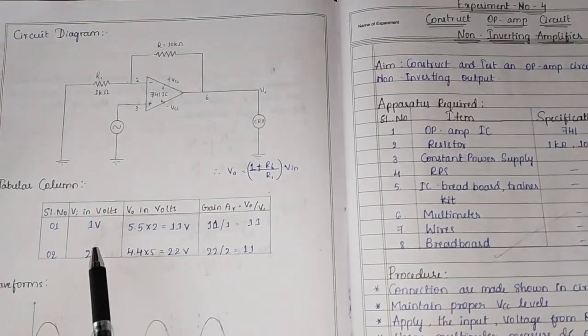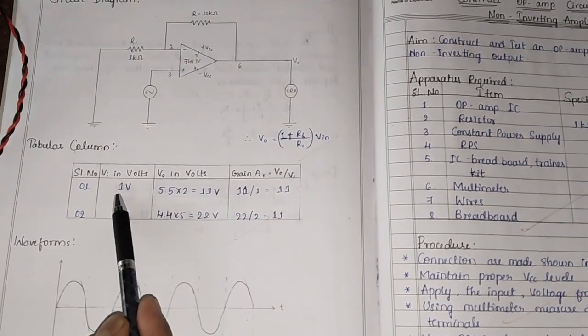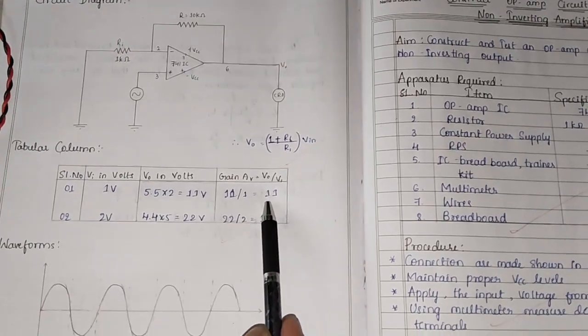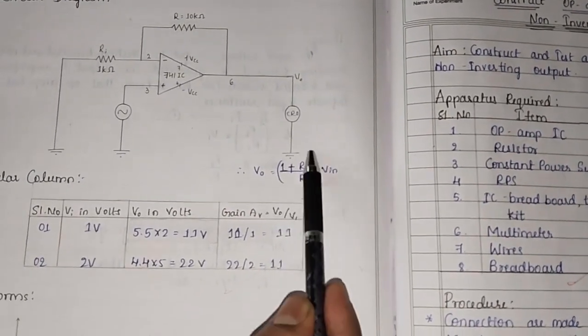In this tabular column, for example, if I apply an input voltage of 1 volt, then at output we obtain 11 volts. How is this possible? This is possible because of this formula.